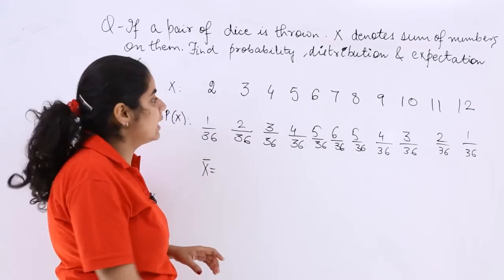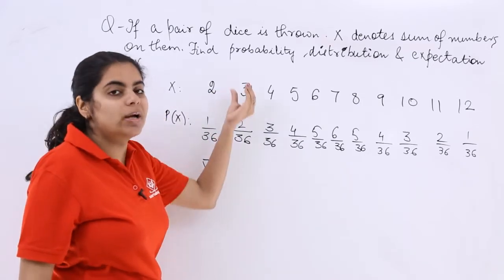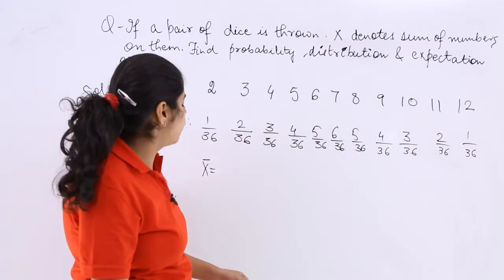So the mean or the mathematical expectation can be calculated as this multiplied by this. That means P1 X1 plus P2 X2 plus P3 X3 and so on till P12 X12. So what to do?